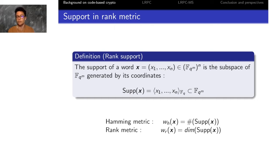Whereas in Hamming metric the Hamming weight was the cardinality of the support, now in rank metric the rank weight is the dimension of the support.